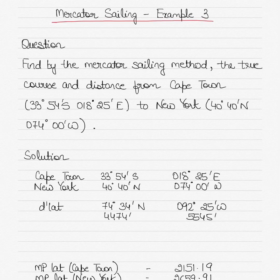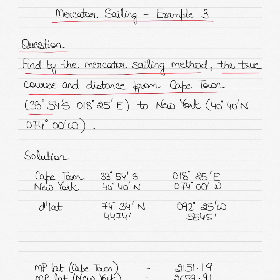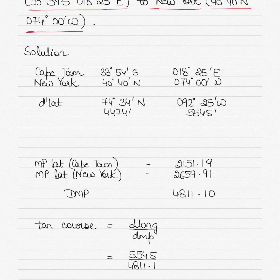The distance between these latitudes can be calculated using the meridional parts table. So let's get started. The question here says that you have to find by the Mercator sailing method the true course and the distance from Cape Town (33°54'S, 18°25'E) to New York (40°40'N, 74°00'W). Let's get started with how to solve the question.